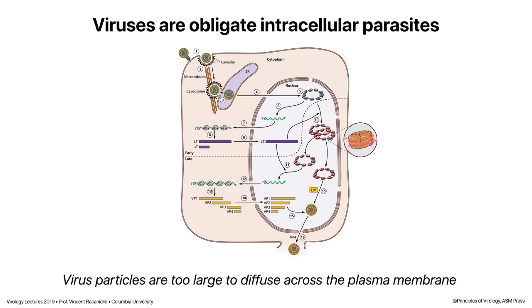The key here is that viruses are too big to diffuse across the plasma membrane of a cell. They're obligate intracellular parasites — they have to get into a cell in order to reproduce. But the plasma membrane is not allowing them to diffuse across it. So viruses of animal cells have to bind to cell receptors on the surface and be taken up into cells by pathways that exist in the cells already to take up macromolecules. Viruses have evolved to use them as well.